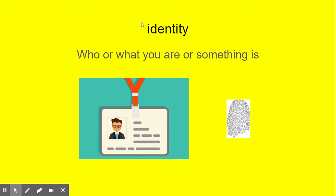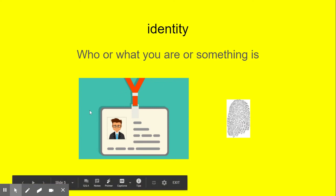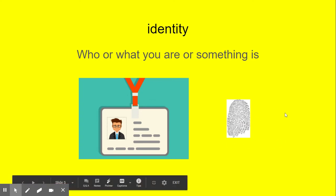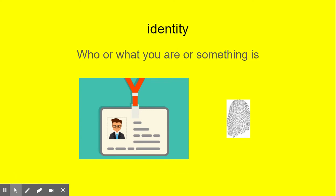Now this word, boys and girls, is identity. Say that word with me: identity. Identity means who or what you are or something is — it is all about who you are. This ID badge is someone's identity; it lets the place they work know that they belong there. This is a fingerprint — your fingerprint is unique to you and it is part of your identity. Who or what you are or what something is. Awesome.